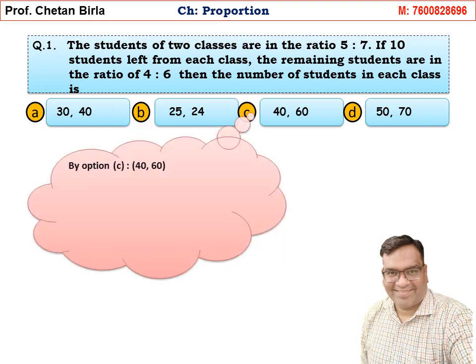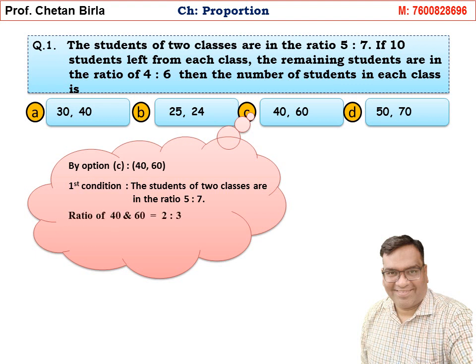Moving towards Option C: 40 and 60 students. The first condition is the ratios of 2 classes are in the ratio 5 is to 7. The ratio of 40 and 60 is 2 is to 3, which is not equal to 5 is to 7. So Option C is not correct. Since Options A, B, and C are eliminated, the remaining option is D, so D is the answer.